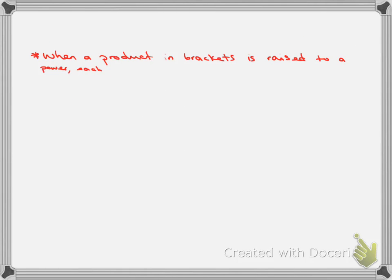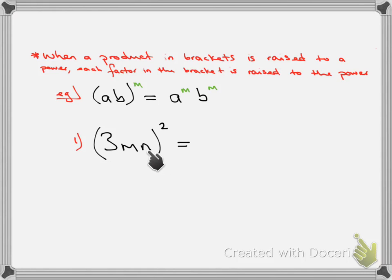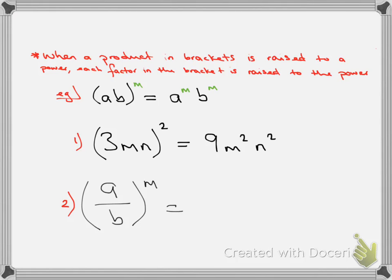When a product in brackets is raised to a power, each factor in the bracket is raised to that power as well. So (ab) to the power of m gives a to the m times b to the m. For example, (3mn) squared: we raise 3 to the power of 2, which is 9, then m to the power of 2, and n to the power of 2. For a fraction, (a over b) to the power of m gives a to the m over b to the m — each part gets the power.